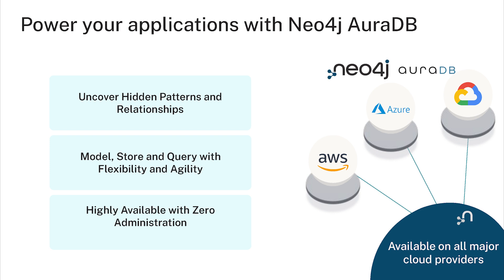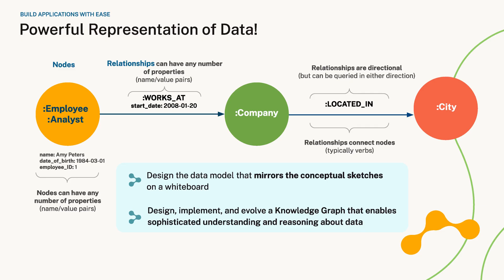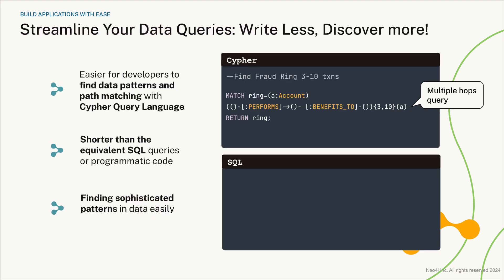You start with a property graph model — it's easier to model your data just like you conceptualize it on the whiteboard. You can further evolve the property graph to a knowledge graph, which is a sophisticated way to model your domain. The graph model is completely flexible, allowing you to change and adapt as your requirements change.